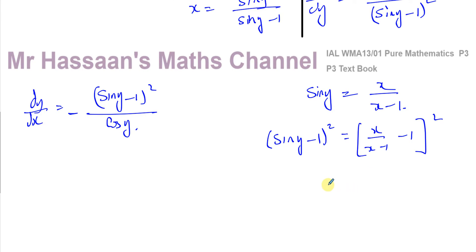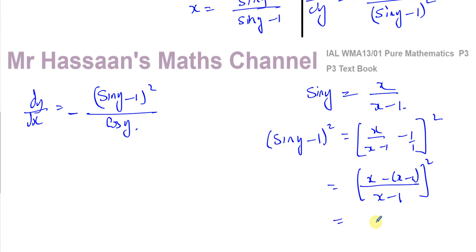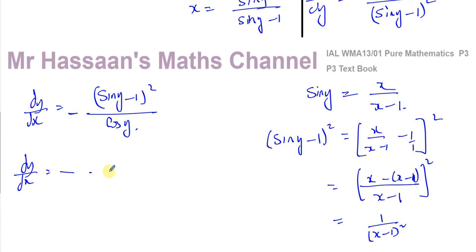Writing x over (x minus 1) minus 1 as a single fraction gives (x minus (x minus 1)) over (x minus 1), which equals 1 over (x minus 1). Squaring that: (sine y minus 1) squared equals 1 over (x minus 1) squared. So I can substitute that into dy/dx.